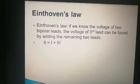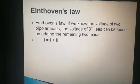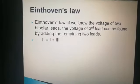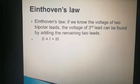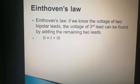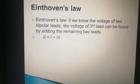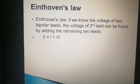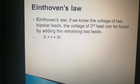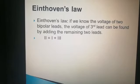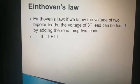Firstly, the third learning outcome: Einthoven's Law. Einthoven's Law states that if we know the voltage of two bipolar leads, the voltage of the third lead can be found by adding the remaining two. Lead 2 is equal to the voltage of Lead 1 plus the voltage of Lead 3. So by adding the voltage of two leads, we can achieve the voltage of the third lead.